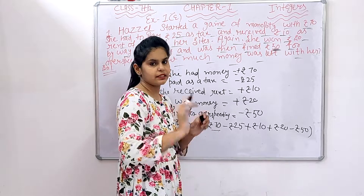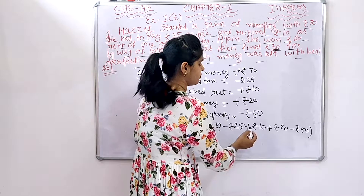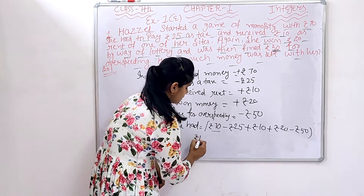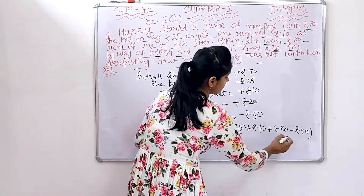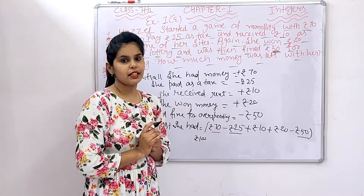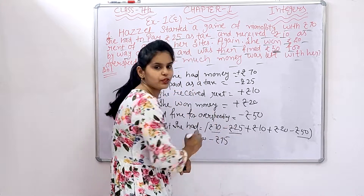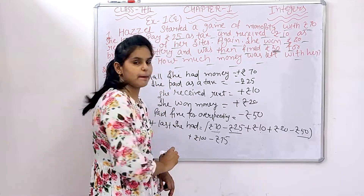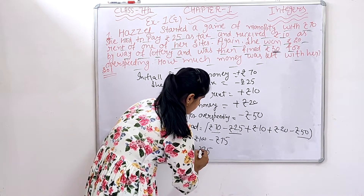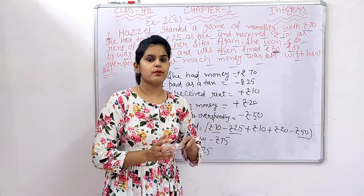Now we group the positive terms: 70 plus 10 is 80, and 80 plus 20 gives Rs. 100. Then the negative terms: 25 plus 50 gives Rs. 75, with a minus sign. So the final answer is Rs. 100 minus Rs. 75, which equals Rs. 25. She was left with Rs. 25.